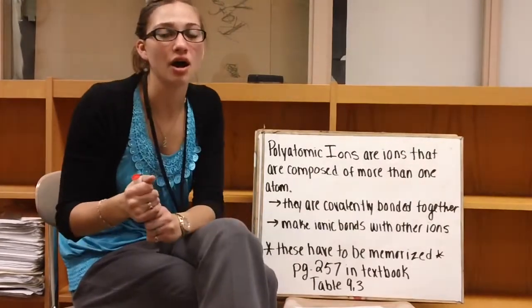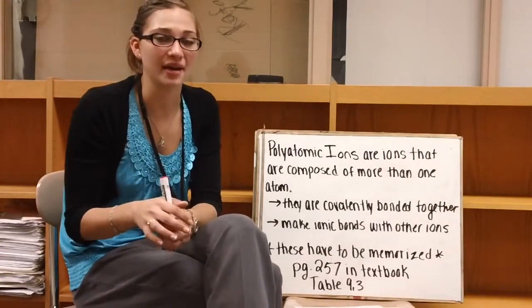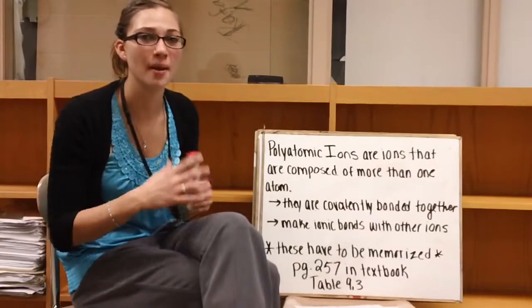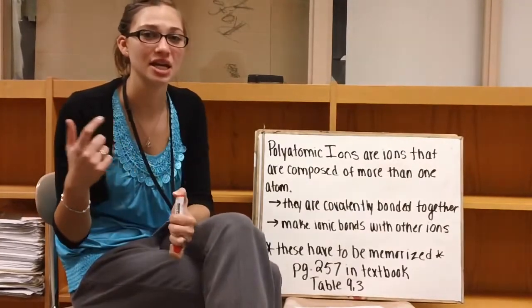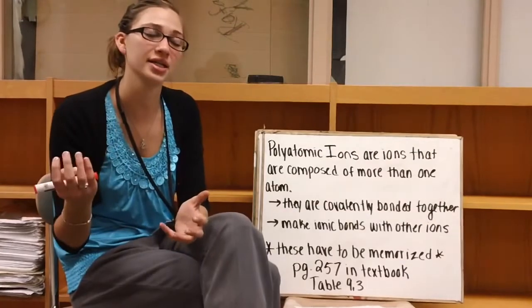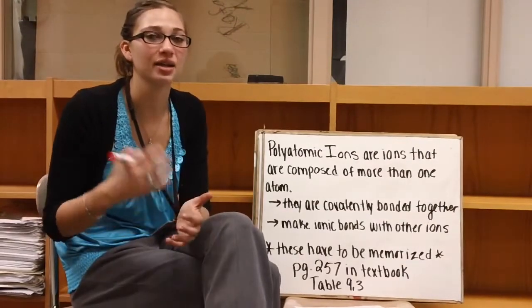So polyatomic ions are ions that have more than one atom. Those atoms are covalently bonded together, but if a polyatomic ion is going to combine with a cation or an anion, it's going to make an ionic bond.